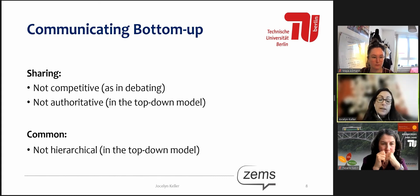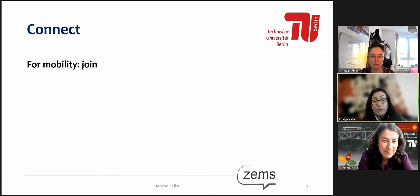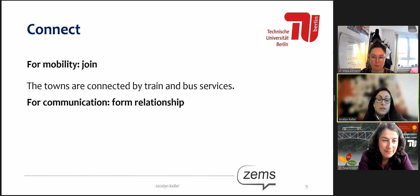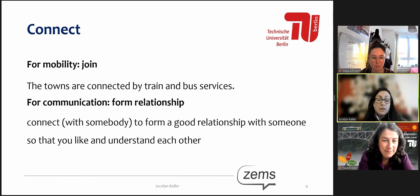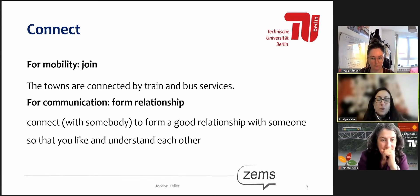Another word I would like to define is 'to connect.' As you all have an interest in mobility, the first definition you might think of is 'join,' as in: 'The towns are connected by train and bus services.' In this workshop, of course, we'll be dealing with the Oxford definition for communication — not mobility — namely, to form a good relationship with someone so that you like and understand each other. In the context of this workshop, liking the person who has a different opinion is wonderful, but it's not the ultimate goal. Understanding each other — that is the goal in connecting.